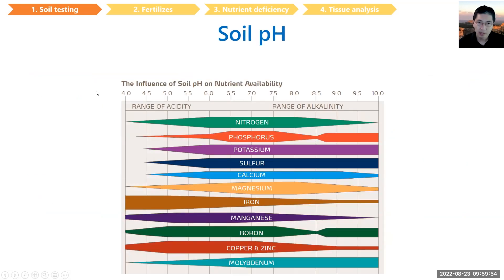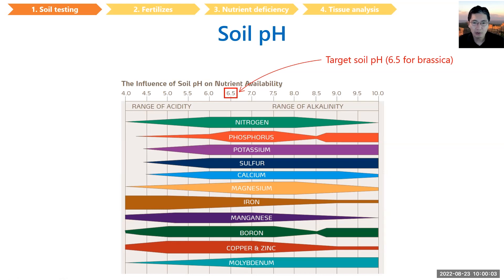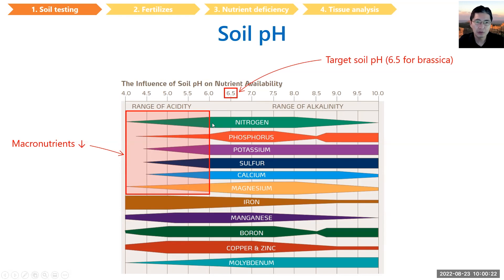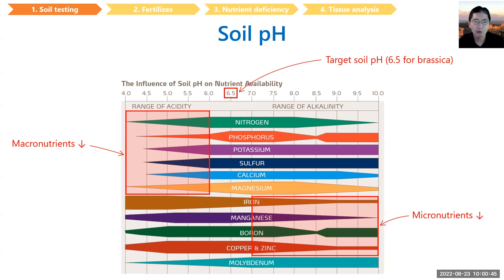Starting with soil pH: 6.5 is the target soil pH for brassicas. Brassicas are only slightly tolerant to acidic soil, so they don't like too much acidity. This chart shows that when pH is too low, availability of macronutrients becomes limited, and when pH goes too high, micronutrient availability becomes limited. Normally 6 to 7 is the sweet spot, and 6.5 is right in the middle. Soil pH is critically important because it determines nutrient availability, so you must address it before adjusting other soil variables.